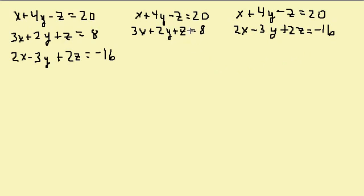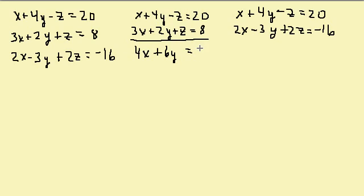And then the third equation: 2x minus 3y plus 2z equals negative 16. Now I need to eliminate the same variable in each one. I'm going to eliminate the z's because all I have to do in this one is just add them and the z's will go out. So I add these two and I get 4x plus 6y equals 28.